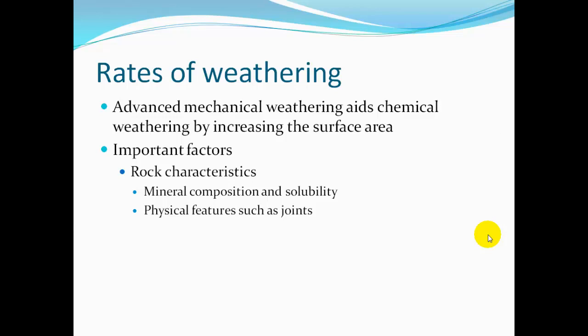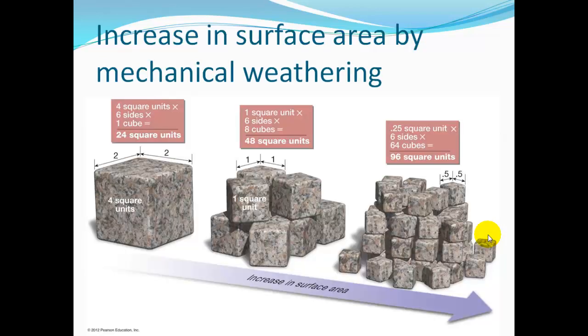Rates of weathering. Advanced mechanical weathering aids chemical weathering by increasing surface area. Rock characteristics include mineral composition, solubility, and physical features such as joints that give more surface area. For example, a cube of rock that's four units square has only 24 square surface units. If you break that cube up into eight smaller cubes, each one unit square, you get 48 square units — twice the surface area for weathering to act on.